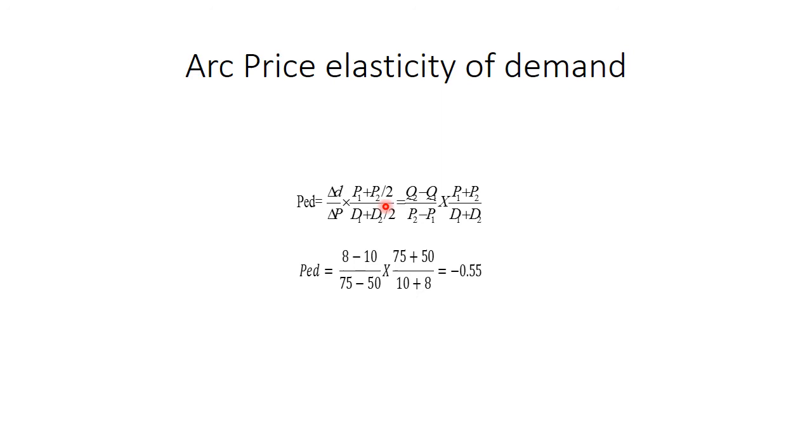You can see in the formula, I have P1 plus P2. This part is same, delta D upon delta P. That is change in quantity and change in price. There is change only here. P1 plus P2 divided by 2 and D1 plus D2 divided by 2. So on simplification, this 2 will get cancelled, that is division by 2. And what we have is Q2 minus Q1, which is nothing but delta D, that is change in quantity demanded. And P2 minus P1, which is nothing but delta P. And P1 plus P2. So what we are doing is, rather than having only one original price, we are taking both the prices. And here, in the same way, in the denominator, we are having both the quantity demanded. So we substitute the numbers in the formula and we get minus 0.5.